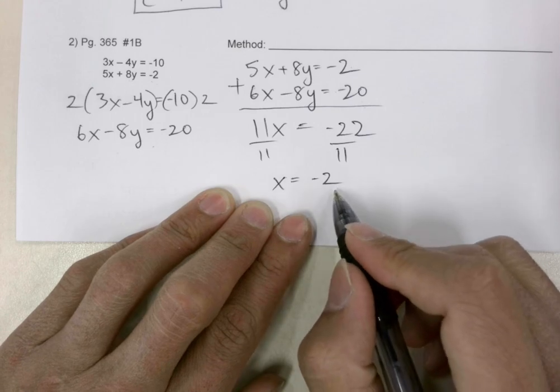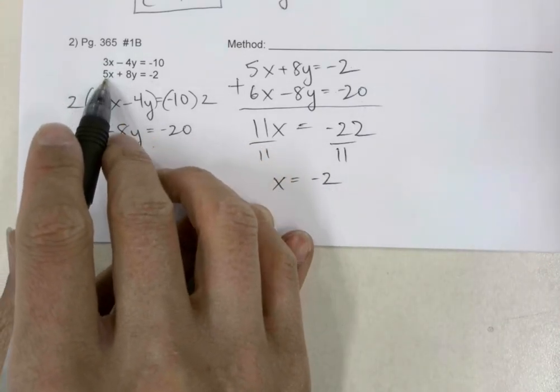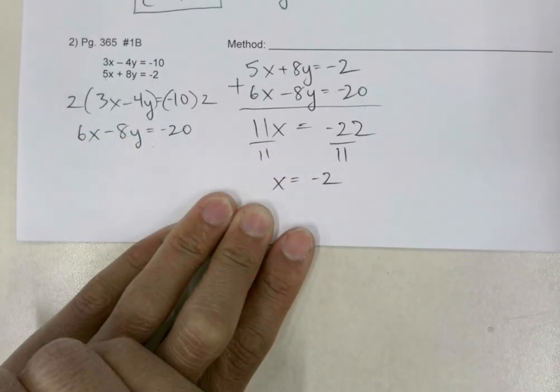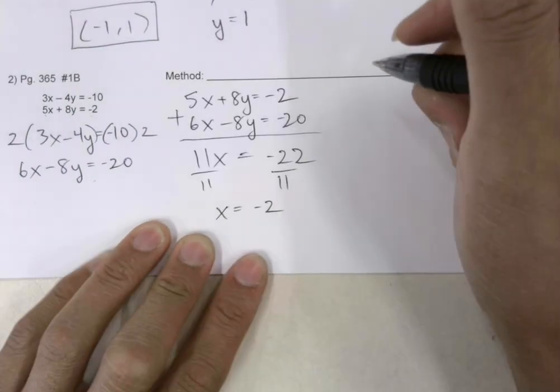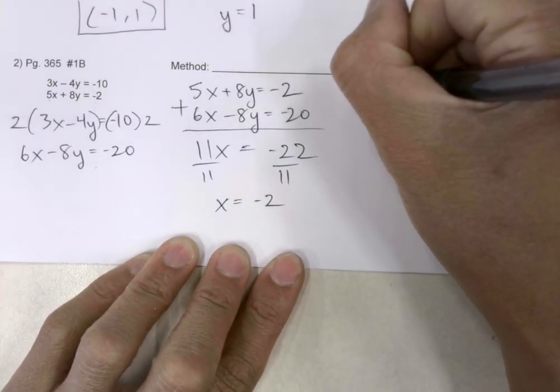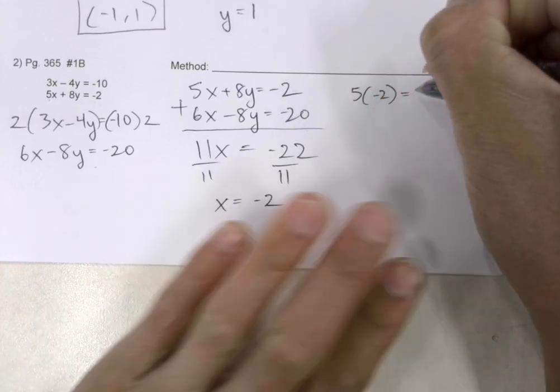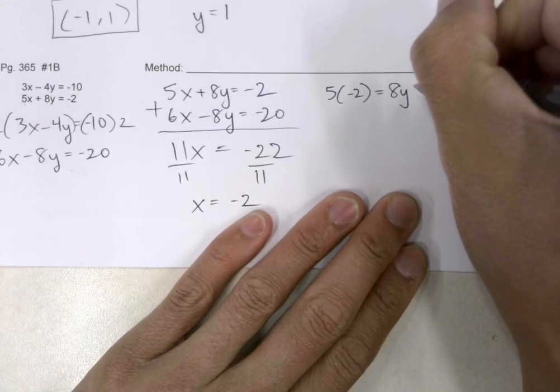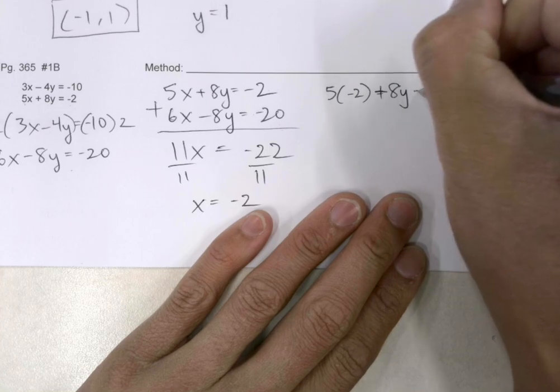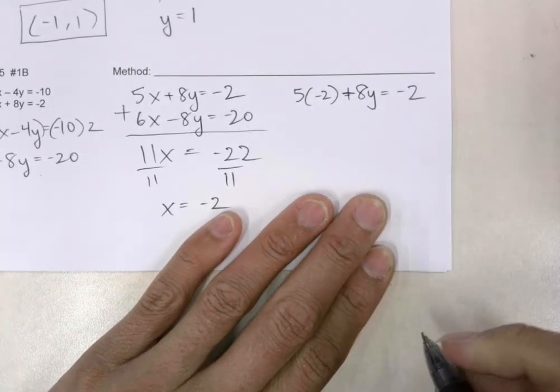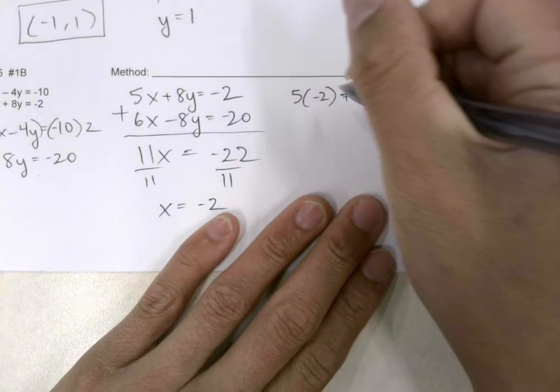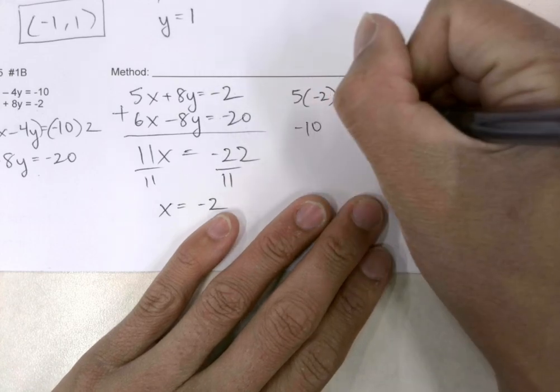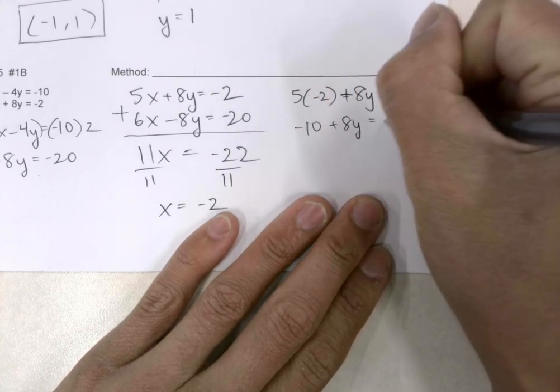Now we're going to plug in x either into equation A or equation B. Equation B looks like a good candidate. I'll say 5 times negative 2 plus 8y equals negative 2. I'll do the multiplication and get negative 10 plus 8y equals negative 2.